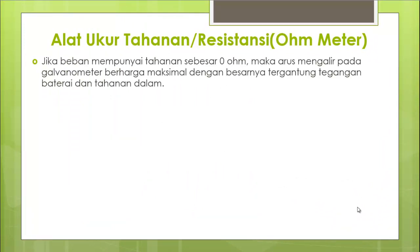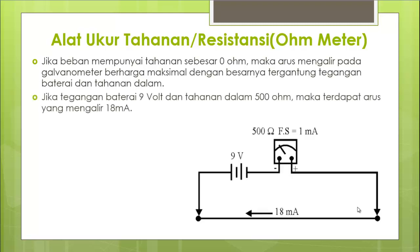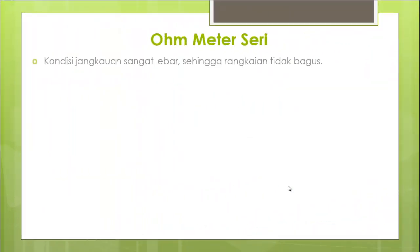Jika beban mempunyai tahanan 0 ohm, arus yang mengalir pada galvanometer berharga maksimal karena R tidak ada. Misalkan tegangan baterai 9 volt dan tahanan dalam 500 ohm, maka arus yang mengalir adalah 18 mA. Ohmmeter seri memiliki jangkauan yang lebar sehingga skalanya cenderung tidak linear. Skala penuh di sebelah kiri menunjukkan tahanan tidak terhingga, sedangkan skala penuh di sebelah kanan menunjukkan tahanan sama dengan nol.